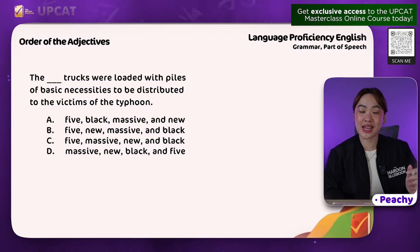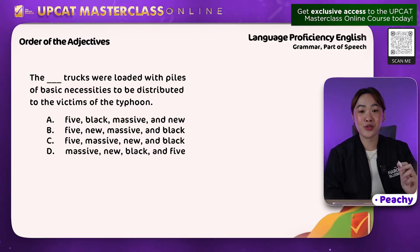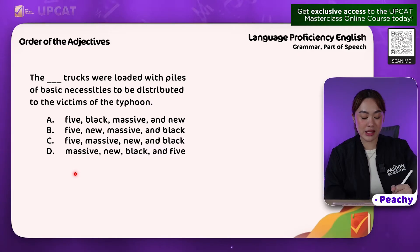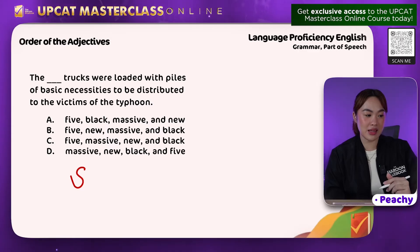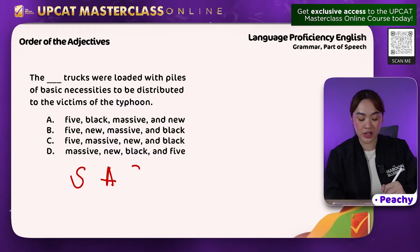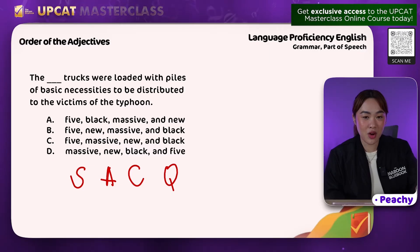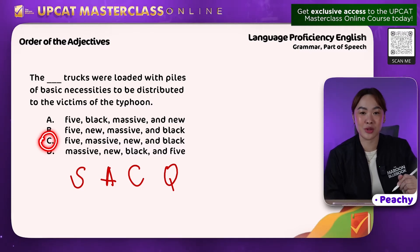Similar to the previous item, we're still looking at the order of adjectives using the acronym DQOSASCOM. In this item, we have four adjectives to look at. We have massive — that's the size (S). Then new — that's the age (A). Then black is the color. Then five is the quantity. So, again, following DQOSASCOM, the correct answer here would be C — the five massive, new, and black trucks were loaded.